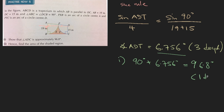Now let's move on to part 2: find the area of the shaded region. For this question you need to find three areas. One is the area of the trapezium ADCB. Once you have this area, you subtract the area of the green sector of the circle, and then subtract the blue sector.